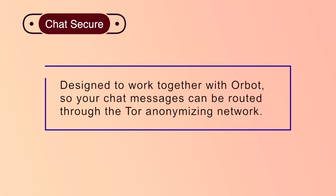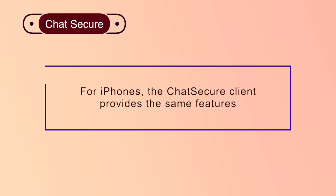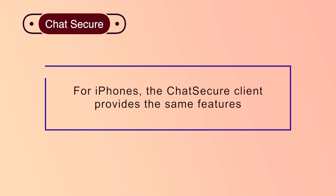ChatSecure has been designed to work together with Orbot, so your chat messages can be routed through the Tor network. This makes it very hard to trace or even find out that it happened. For iPhones, the ChatSecure client provides the same features, although it is not easy to use it with the Tor network.